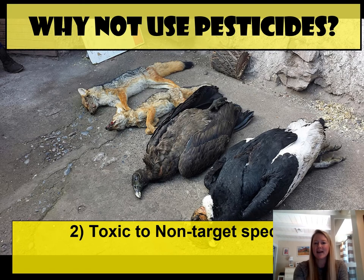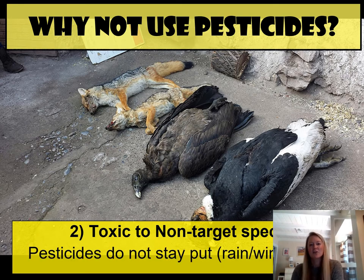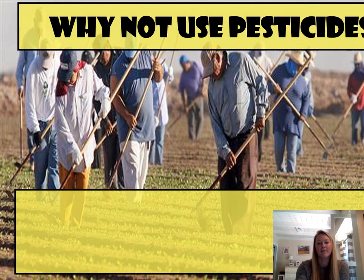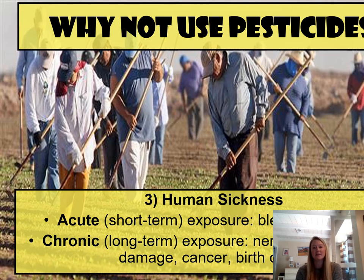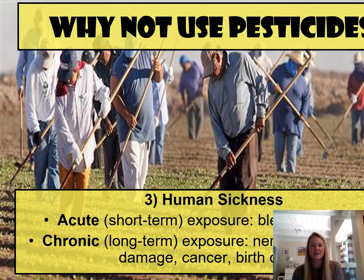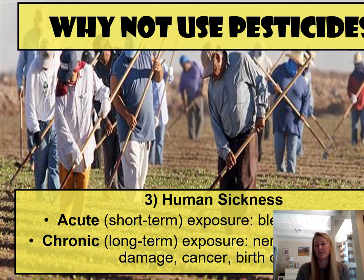Also, pesticides don't stay in place. They can run off into waterways and be ingested by species they weren't intended for, so you do get the loss of life from non-target species. Humans can also get sick — some people are very allergic to pesticides, and constant exposure from working in the fields can make you extremely sick. There are two types of sickness associated with pesticides: acute sickness, which tends to be short-term — things like headaches, nosebleeds, and rashes — and chronic sickness, where you're constantly being exposed long-term. If that chronic exposure happens, you are more likely to develop things like cancers.